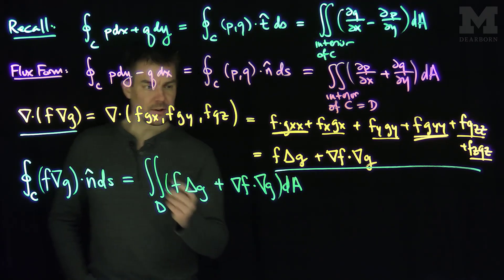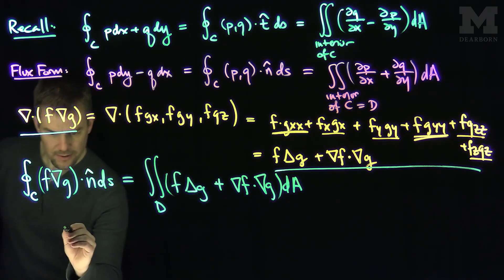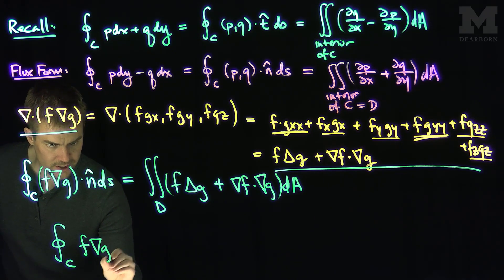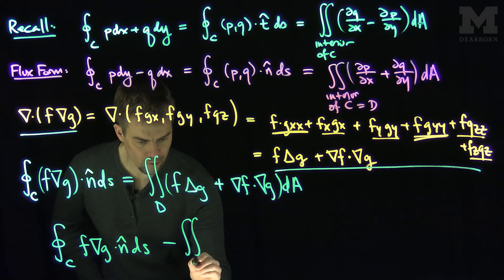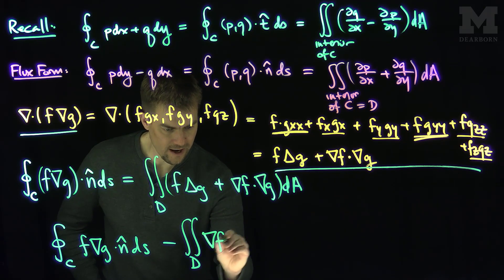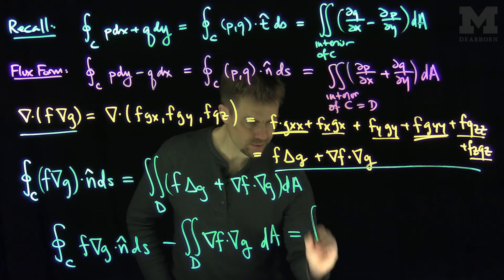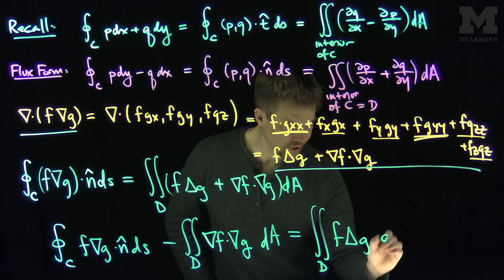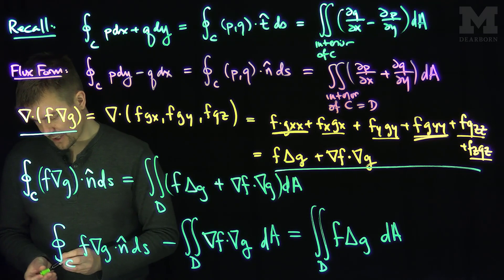And so typically, it's written in the following way. It's written by saying that the flux of this vector field f gradient g dot n hat ds minus double integral over d of gradient f dot gradient g dA is equal to double integral over d of f Laplacian g dA. And this is Green's first identity.